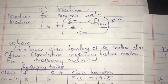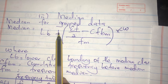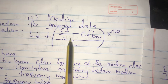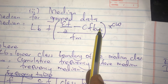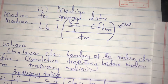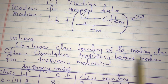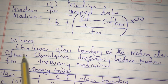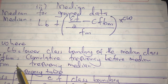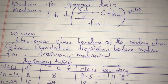The formula for calculating the median for grouped data is: lower class boundary plus, in brackets, summation f divided by 2 minus cumulative frequency before median, divided by frequency median, times the class width. Here, lb is the lower class boundary of the median class, cfbm is the cumulative frequency before median, fm is the frequency of the median class, and cw is the class width.